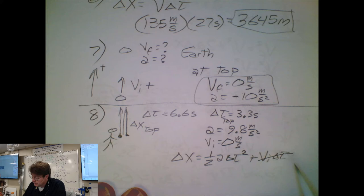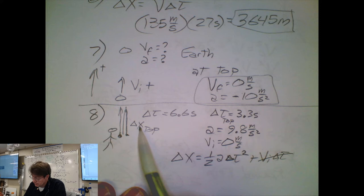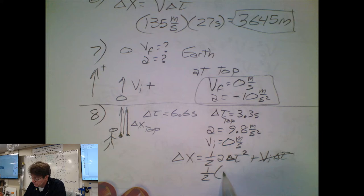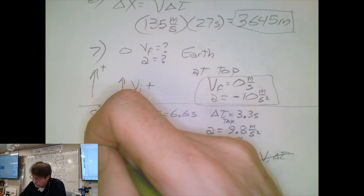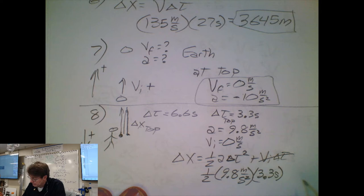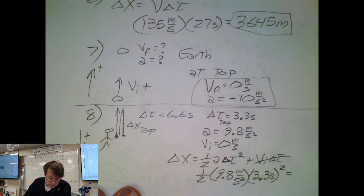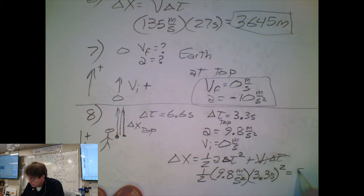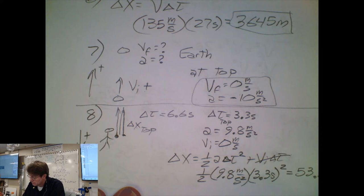Plugging in values with down as positive: acceleration is 9.8 meters per second squared and the fall time is 3.3 seconds, which must be squared — that's the most common mistake people make with this equation. We get an answer of approximately 53.36 meters.